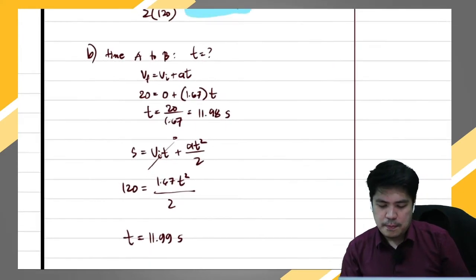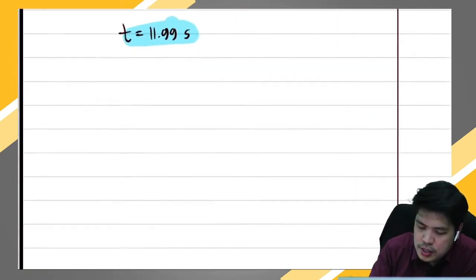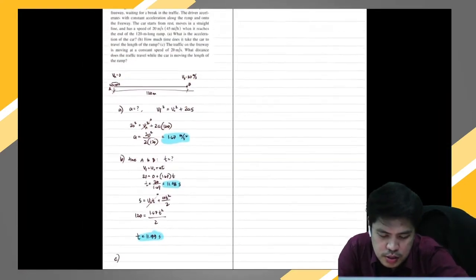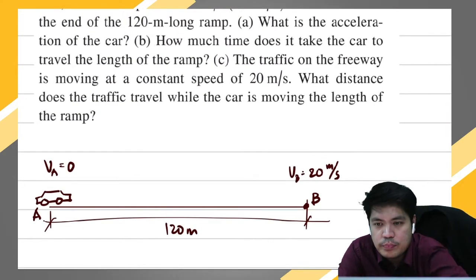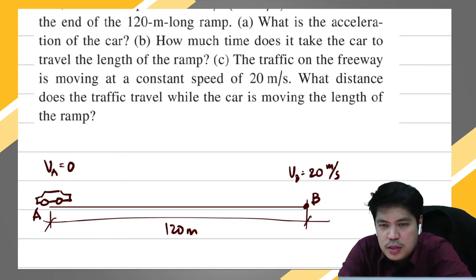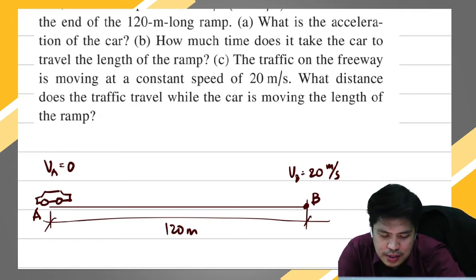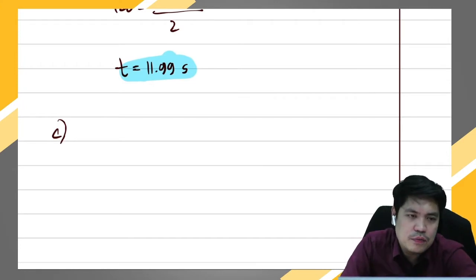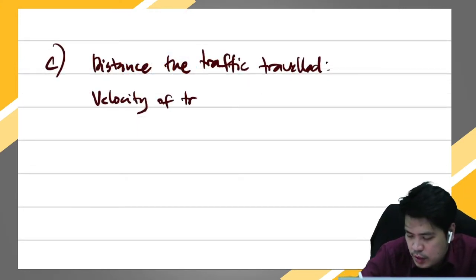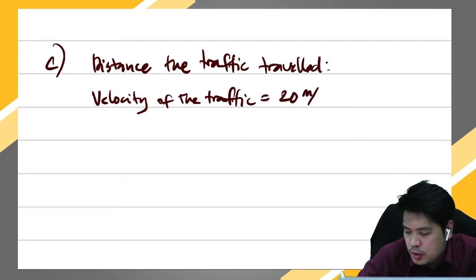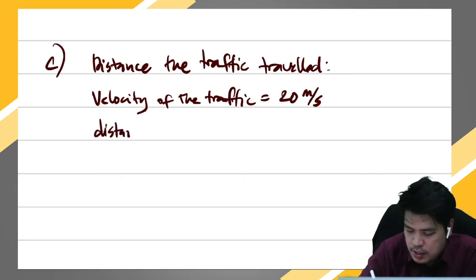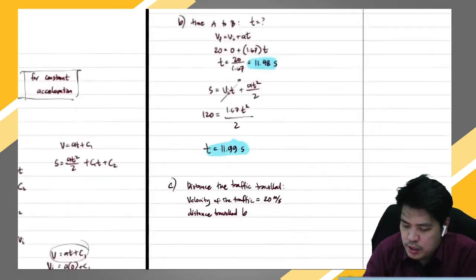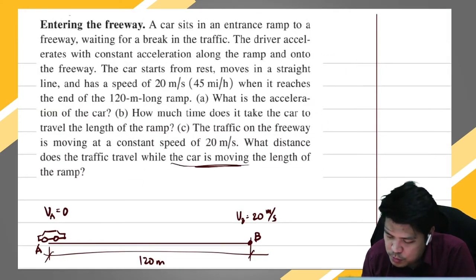So both formulas give the same answer of about 12 seconds. For letter c, the traffic on the freeway is moving at a constant speed of 20 meters per second. What distance does the traffic travel while the car is moving the length of the ramp? We need the distance traveled by the traffic. The velocity of the traffic is constant at 20 meters per second.